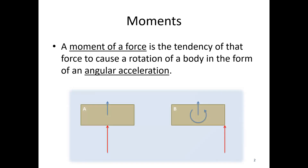If we look at our two boxes sitting on an icy surface: box A, I'm pushing in the middle, it's just going to tend to accelerate away linearly — it's not going to rotate. But if I look at box B, where I push on the corner, it's going to tend to not only accelerate linearly, but it's also going to tend to rotate. This is because this force is exerting a moment about the center of mass of the box.